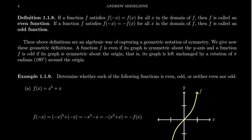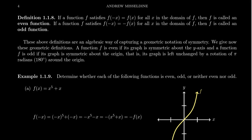In this video we're going to talk about what it means for an algebraic function to be symmetric. If a function f satisfies the relationship f of negative x is equal to f of x for all x in the domain, we call this an even function. On the other hand, if the function satisfies f of negative x is equal to negative f of x for every number x in the domain, we call this an odd function.